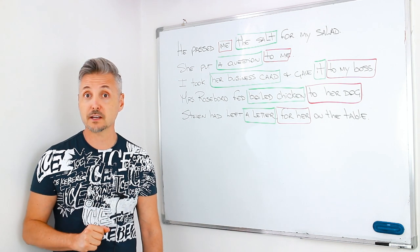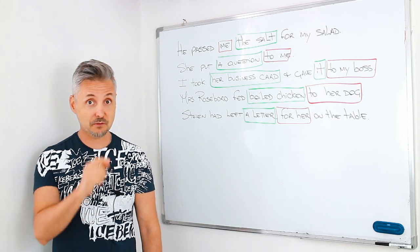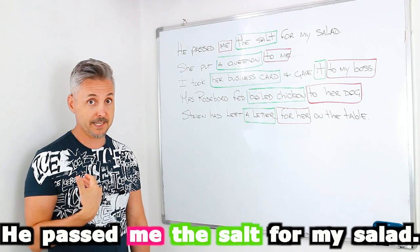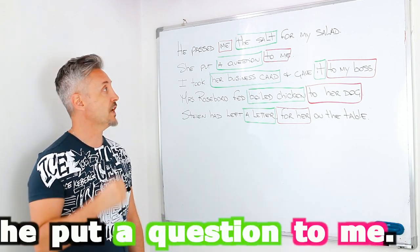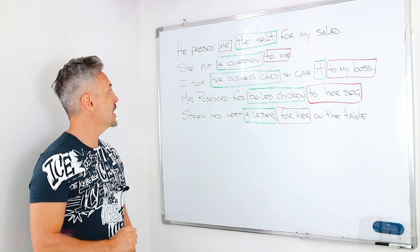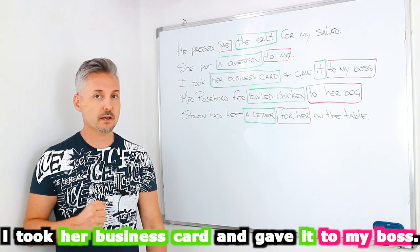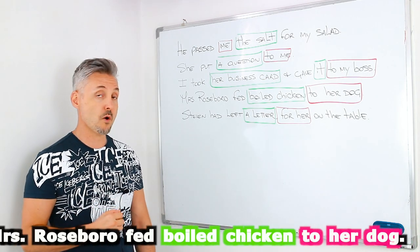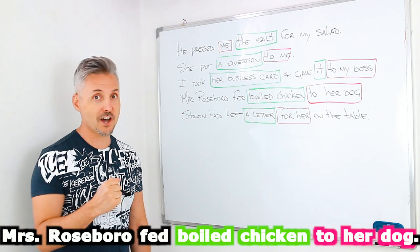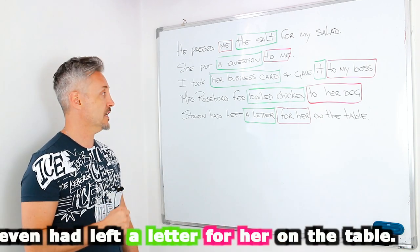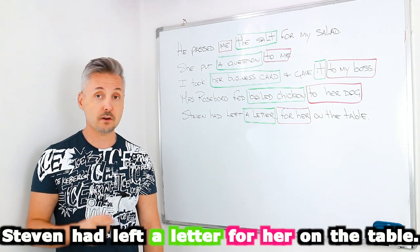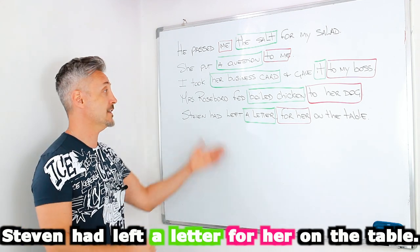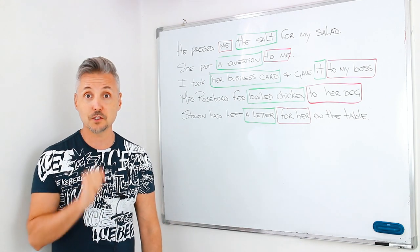Hello everyone, how are you today? This is Mark. I'm doing great, thanks for asking. He passed me the salt for my salad. She put a question to me. I took her business card and gave it to my boss. Mrs. Roseborough fed boiled chicken to her dog. Stephen had left a letter for her on the table. In this lesson, we're going to look at the transitive verbs, so stay tuned.